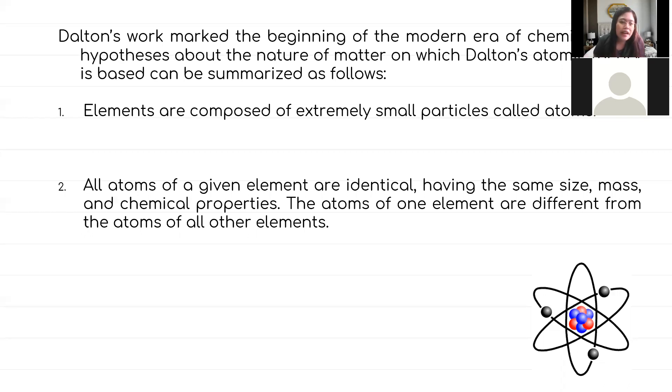Another discovery from John Dalton's experiment: all atoms of a given element are identical. If you say hydrogen element, all the atoms in all hydrogen in the whole world are the same. They are made up of one type of atom with the same mass, the same size, and the same chemical properties.